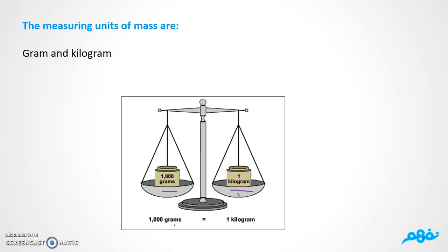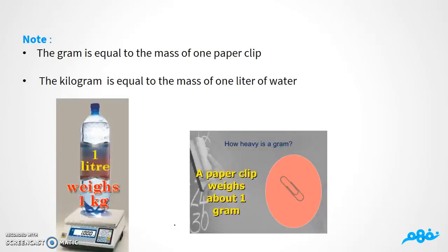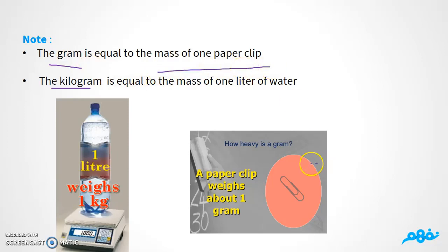Now, what do gram and kilogram actually mean? If you want to explain a gram to a younger brother, you can say that one gram is approximately equal to the mass of one paper clip. And if you want to explain a kilogram, one liter of water is equal to one kilogram.